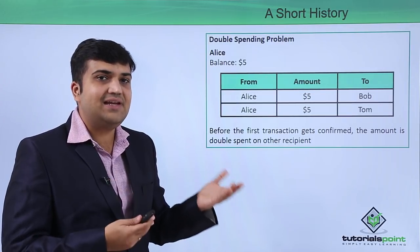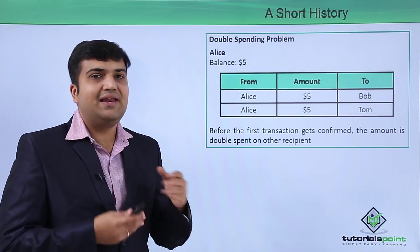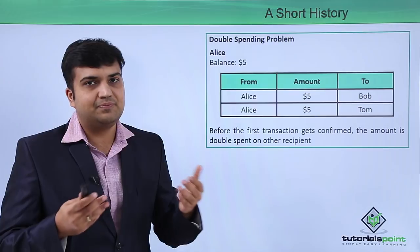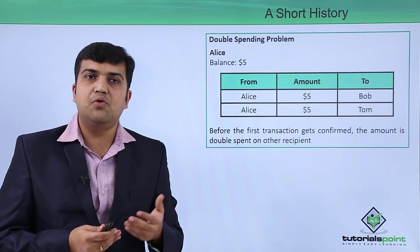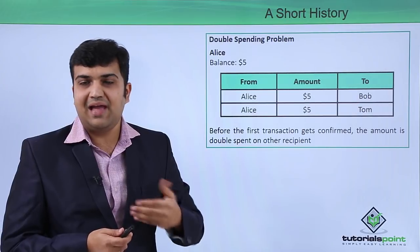This is a classical example of the double spending problem, which is very common in any transaction management system. One of the design goals of blockchain was to prevent such double spending from happening in the system.